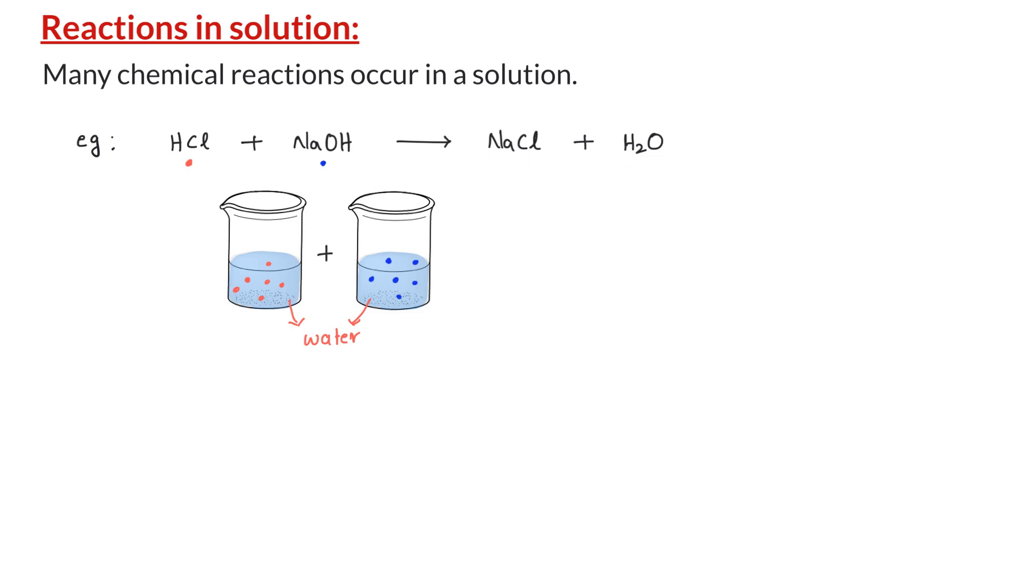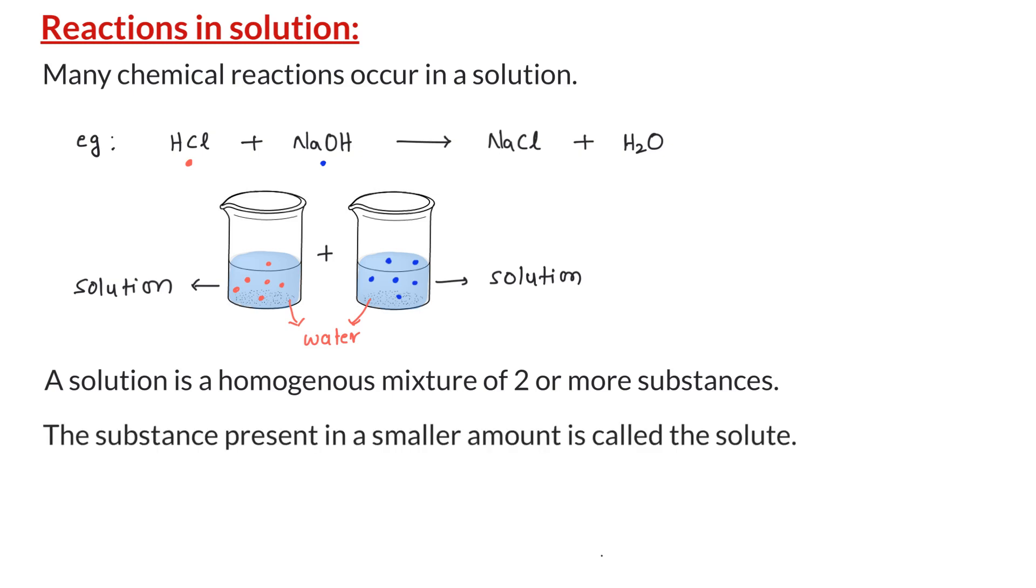The mixture of HCl and water, or NaOH and water, are called solutions. A solution is defined as a homogeneous mixture of two or more substances. The substance present in a smaller amount is called the solute, and the substance present in a larger amount is called the solvent. In the above solutions, hydrochloric acid and sodium hydroxide are the solutes, and water is the solvent for both.